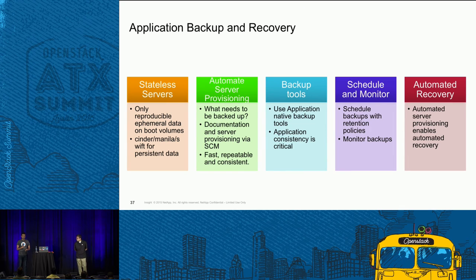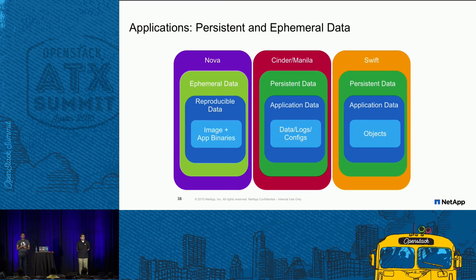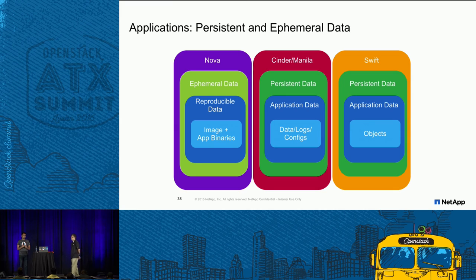Let's look at how all kinds of data map to OpenStack storage. Ephemeral data — reproducible data like images and binaries (static data) — goes into Nova ephemeral storage. Cinder, Manila, and Swift are the persistent storage projects, storing application data, configuration files, logs, and object storage respectively. This decoupling makes your application mobile and platform-independent. Once you segregate persistent and non-persistent storage, you can move your application between platforms or technologies.